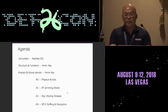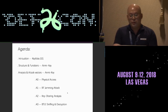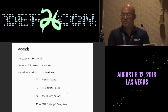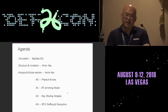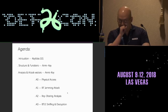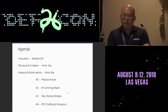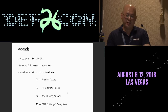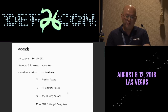Today's agenda is going to be like this: first I'm going to do a quick introduction about key fob 101, then I will walk through the structure and functionality of our target today, called Army Key — also known as the digital car key. Then I will do some analysis and introduce attack vectors on this Army Key system, starting from the physical layer, then the RF layer, then the application layer, and finally we'll see how to do some Bluetooth sniffing and decrypt the packets.